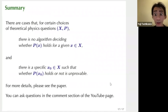So let me summarize. There are cases that for certain choices of theoretical physics questions that there is no algorithm deciding whether the particular property holds for a given x and furthermore there is a specific x such that whether that system x_0 has property P or not is unprovable.